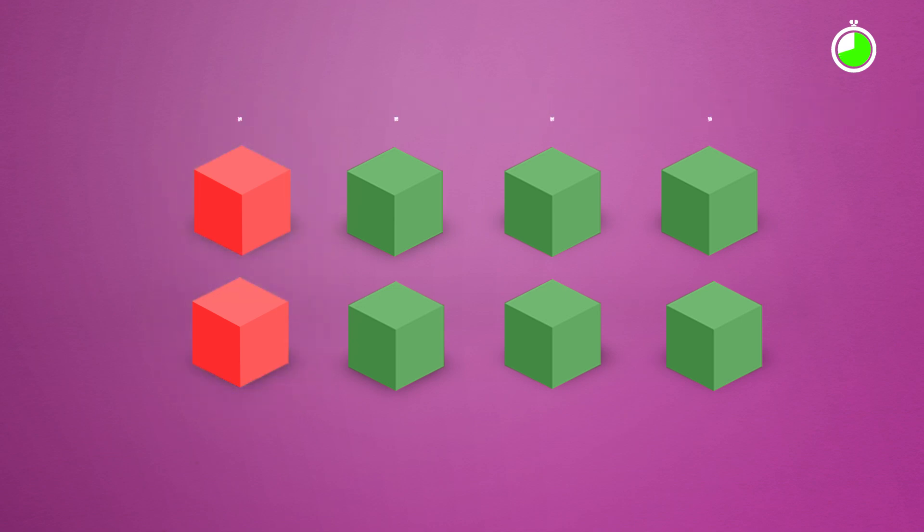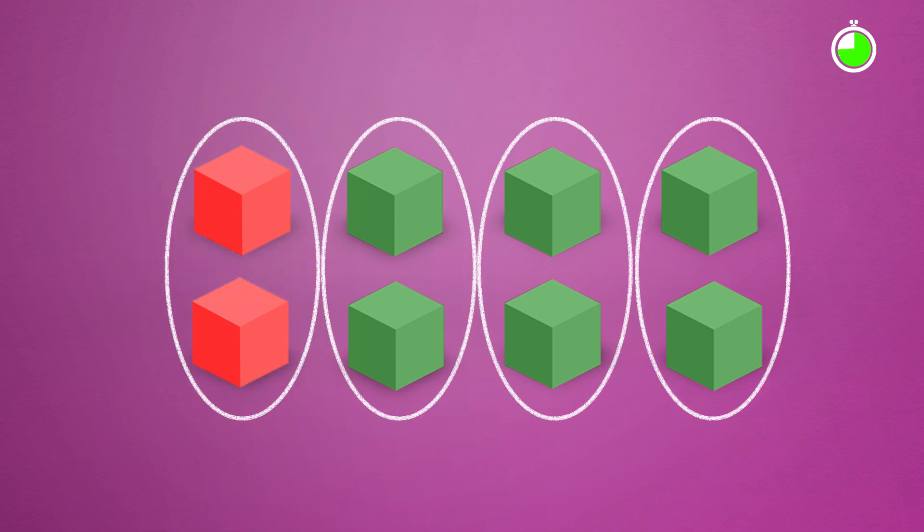But when we circle them like this, the students need to unitize two cubes as being one. In doing so, I can say that one fourth of the cubes are red.